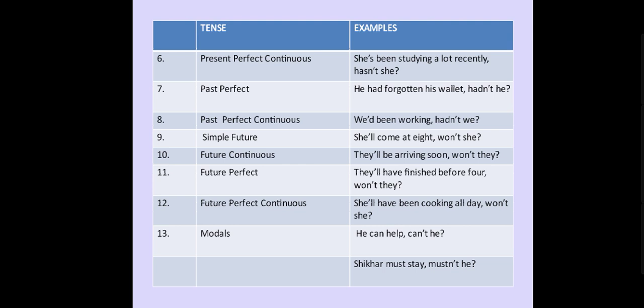Simple future — 'She will come at 8, won't she?' Future continuous — 'They will be arriving soon, won't they?' Future perfect — 'They will have finished before 4, won't they?' Future perfect continuous tense — 'She will have been cooking all day, won't she?' You need to take care of the tense when writing your question tag.